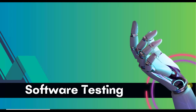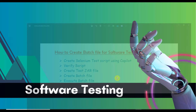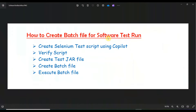Today I'll show you how you can run your Selenium automation testing using a Windows batch file. Today's topic is: how to create a batch file for a software test run. First, we will create a Selenium test script using Copilot, then verify the script, then create a test JAR file, then create a batch file, then execute the batch file. Batch files are needed for many different purposes, and today we'll use one for software testing.